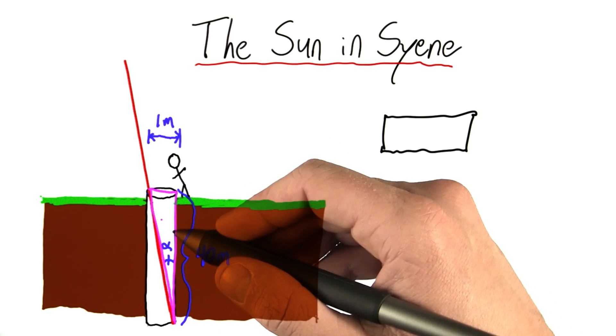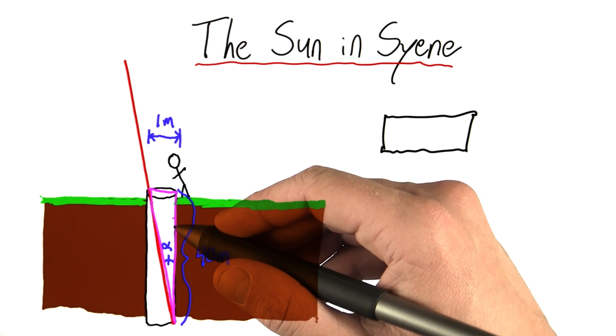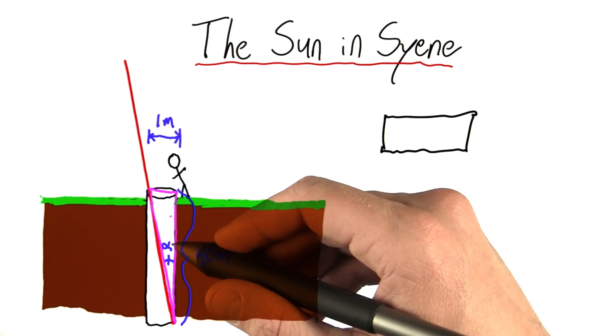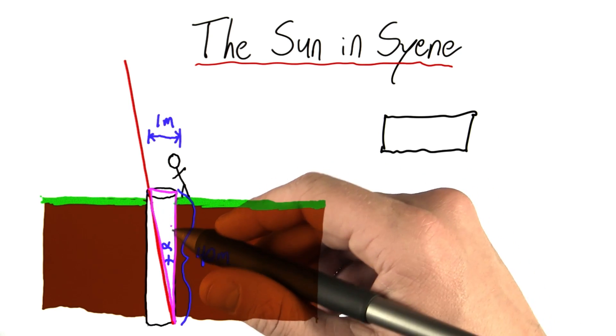So, once again, as often happens in nature, we were able to find a right triangle even though it wasn't totally obvious at the start of the problem that it existed.